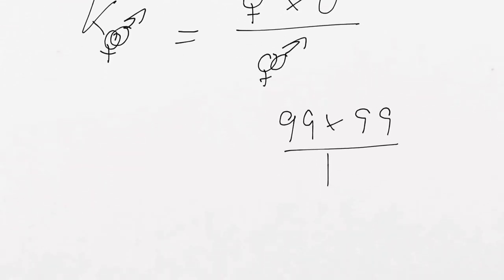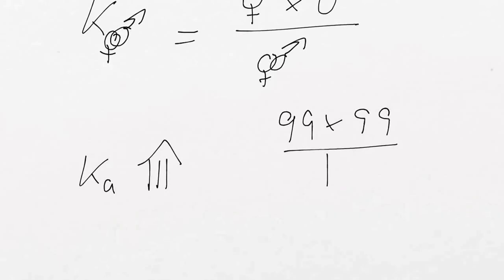What does this Ka tell us then? What is it numerically? Is it large? Is it small? It's pretty large, isn't it? It is 100 squared, basically. 100 times 100 is 10,000 divided by 1, roughly. So it's around 10,000 or so. So Ka is pretty large.